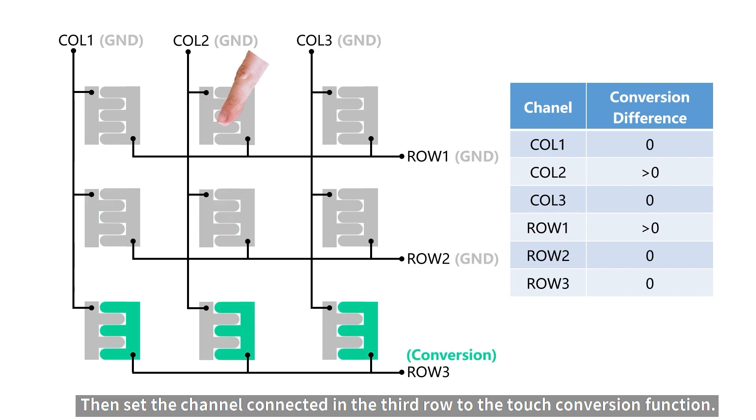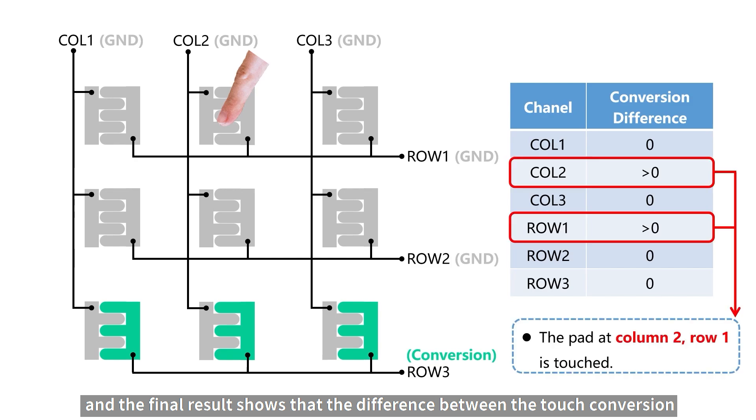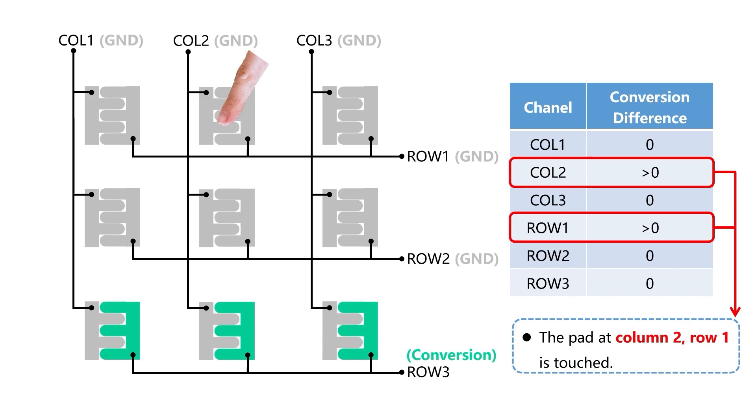Then, set the channel connected in the second row to the touch conversion function. The occurred touch conversion difference is equal to 0. At this point, all touch conversion channels have been collected. The final results show that the difference between the touch conversion of the second column and the first row is greater than 0. Therefore, it can be determined that the pad in the second column and the first row is touched.